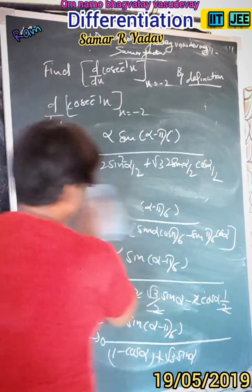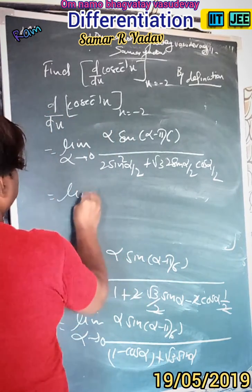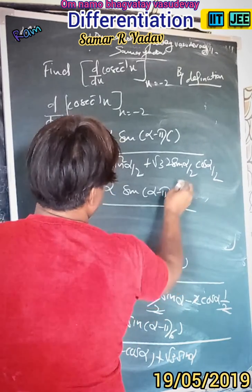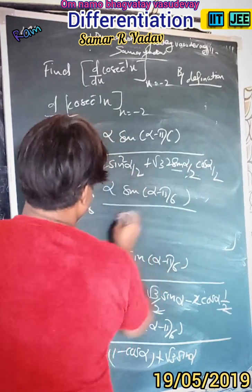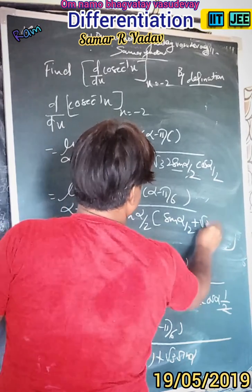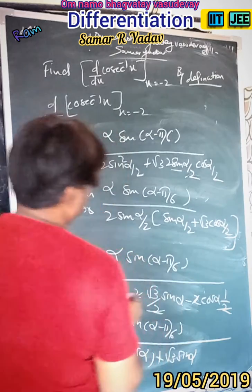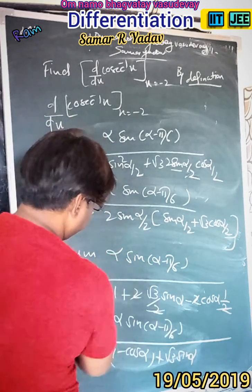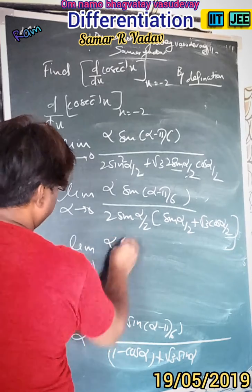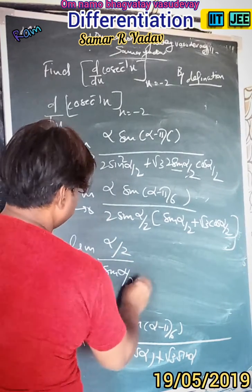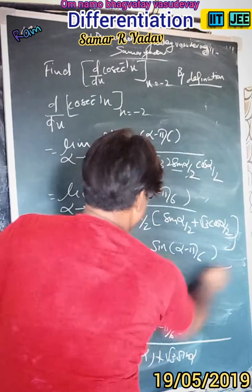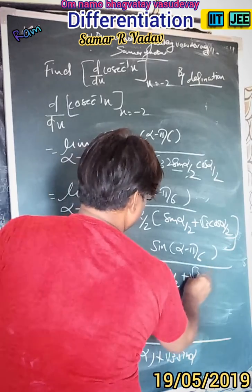So we get: limit α tends to 0 of α·sin(α - 5π/6) upon the denominator. We take 2sin(α/2) common from the denominator, so we can write sin(α/2) + √3·cos(α/2). Then we rewrite as: limit α tends to 0 of α upon [2/sin(α/2)] times sin(α - 5π/6) upon [sin(α/2) + √3·cos(α/2)].